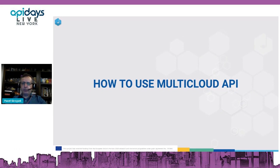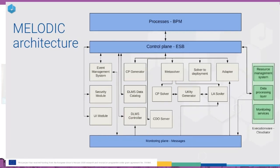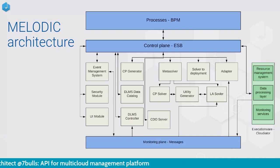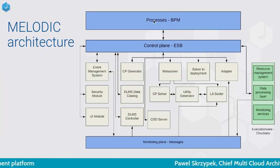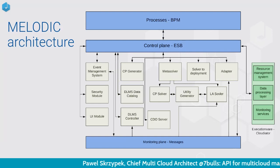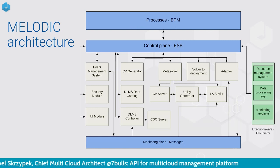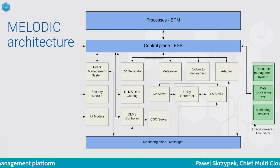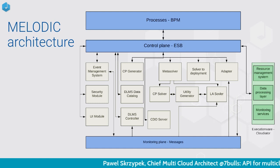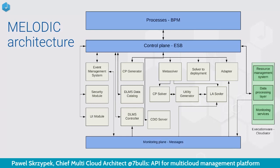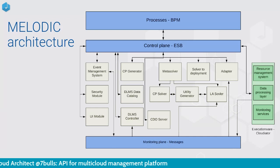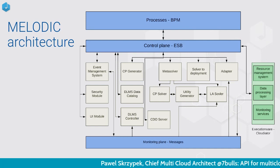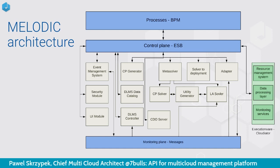How is Melodic built? It is built in a quite pure microservice architecture. Each key component is a separate Docker container. We use an ESB to communicate between the components, and we process BPM in Camunda as a workflow orchestrator. We connect to the public cloud providers through the ExecutionWare, which is our abstract API layer that connects directly to the cloud provider. From the user perspective, there is one unified multi-cloud API, which is translated by Melodic — and especially the ExecutionWare component — to the API of the selected cloud providers.